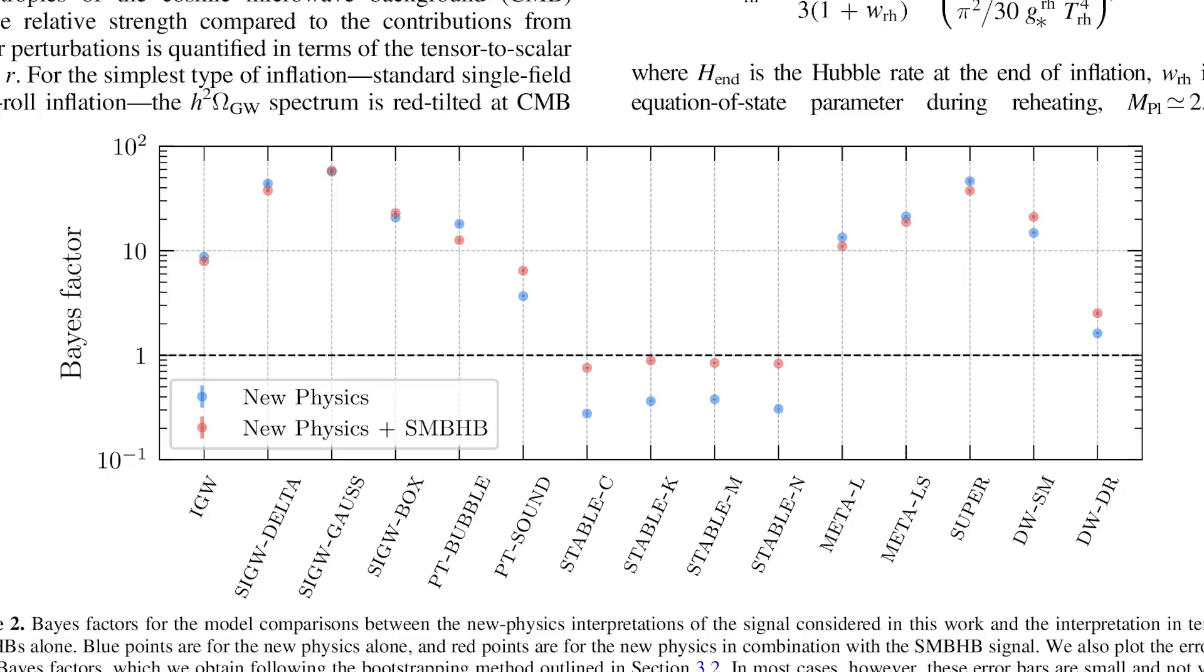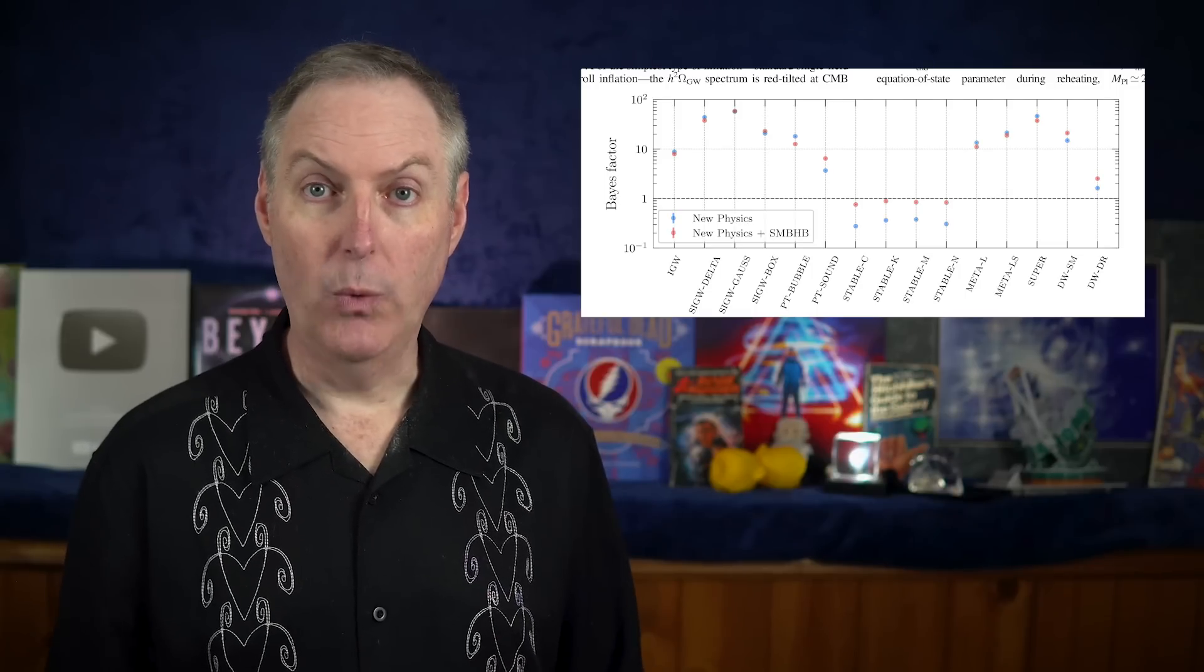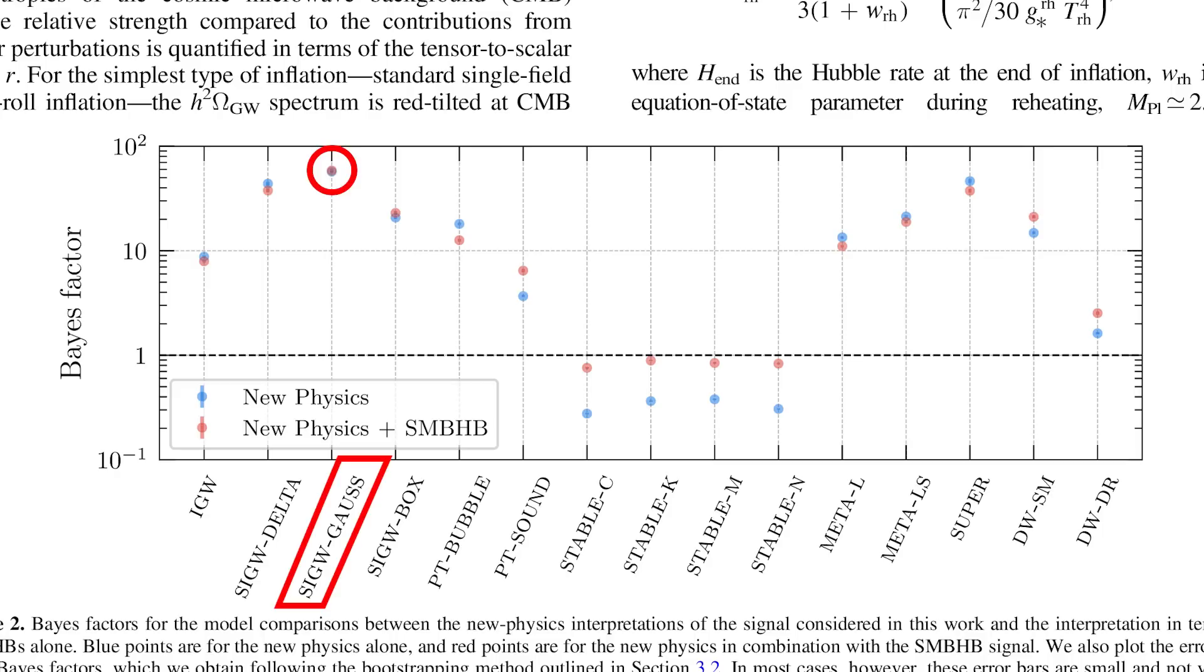The probability of one hypothesis being more correct than the other is represented by something called the Bayes factor. When you get to Bayes factors approaching 100, it's probably a hypothesis worth considering. Sure enough, there are a couple of very high marks here. One is for a model that includes scalar-induced gravitational waves, which I suppose is a kind of inflation-induced gravitational wave. Another is for a model involving cosmic superstrings stretching across the universe.